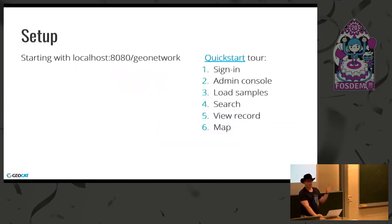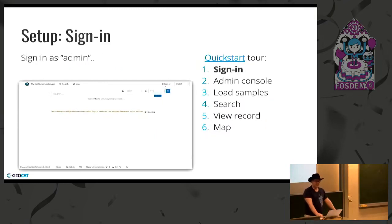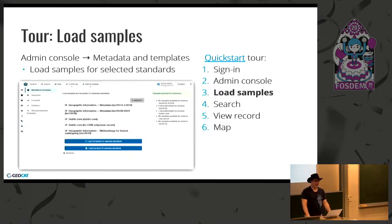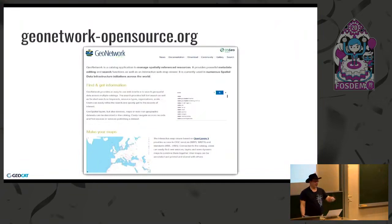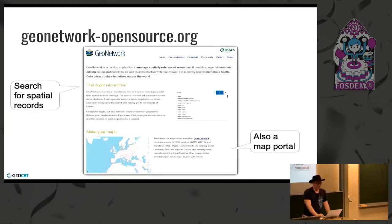In terms of setup, starting with one of these localhost URLs, we're presented with a nice blank screen. We sign in using admin and admin, then we get into the administration console. I went through and changed the title and description — so this would be my catalog. They've got a little example where we can load in some sample data, and that's enough to actually begin trying it out. The next part of the website talks about finding and getting information, and then there was a surprise to me — there's a map portal built in.